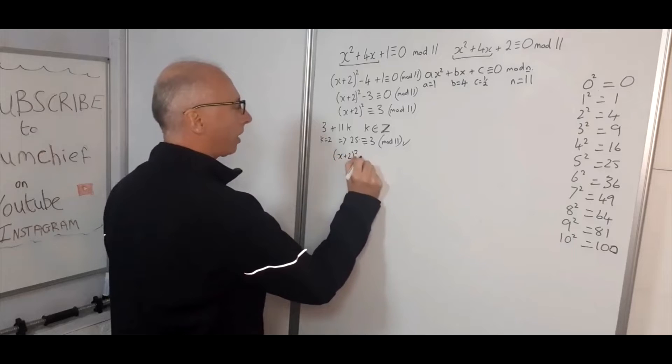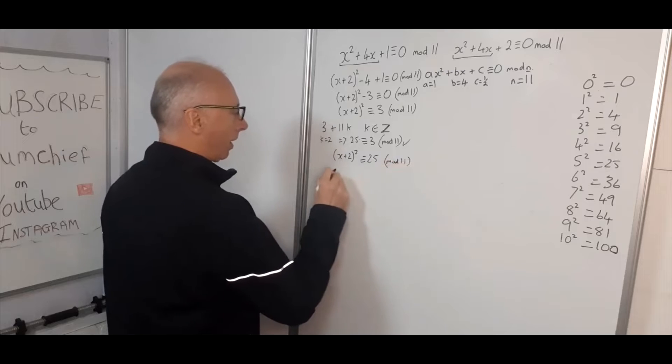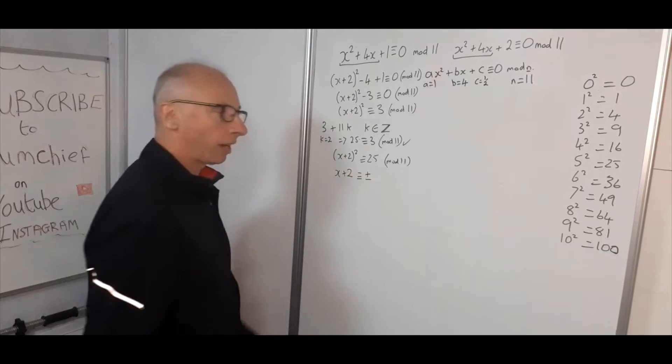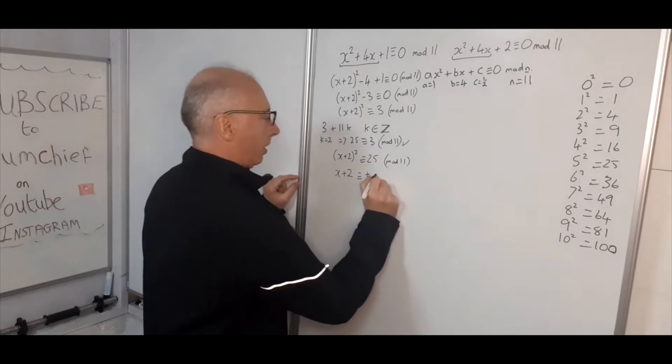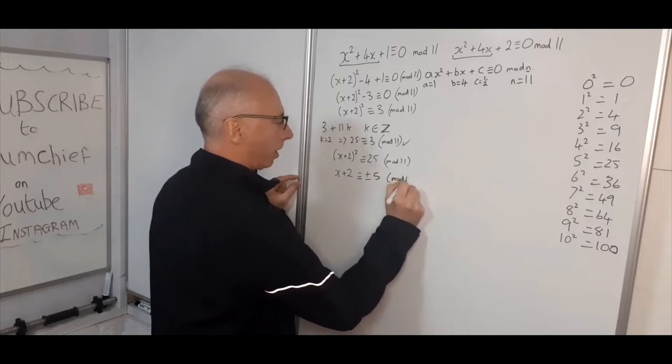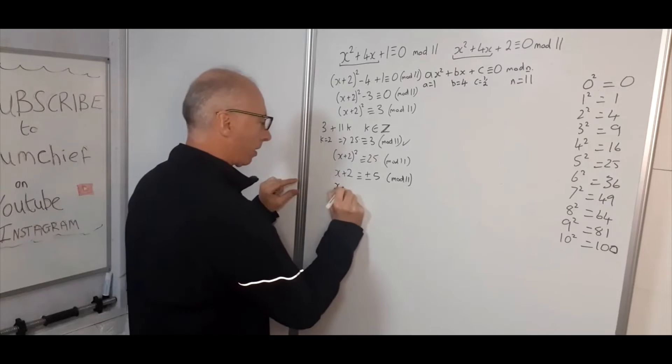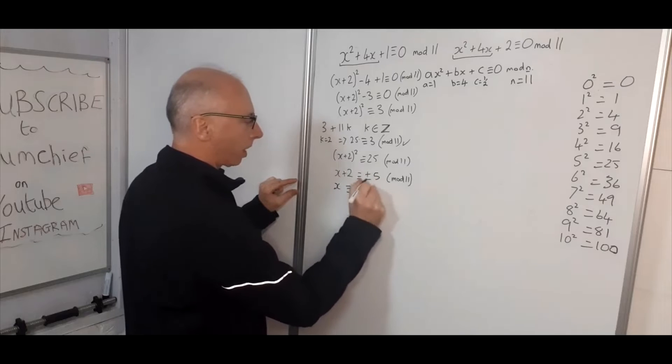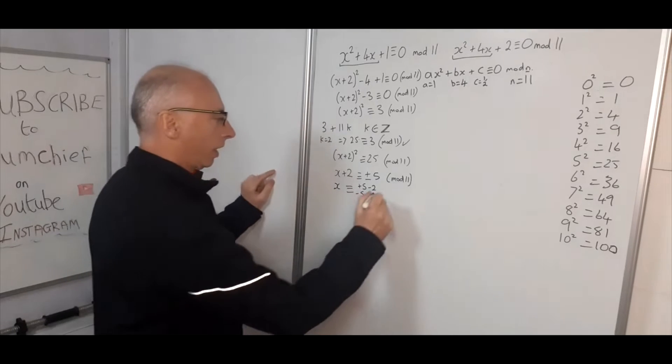So x plus 2 is congruent with plus or minus 5. Don't forget the two solutions for the square root there. So plus or minus 5 again sticking with the mod 11. So now we end up with x is congruent with plus 5 minus 2, and then minus 5 minus 2, and again mod 11.